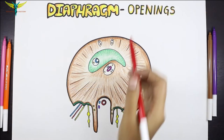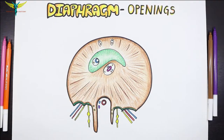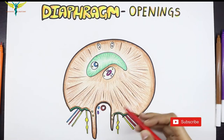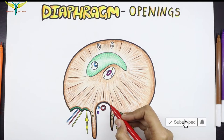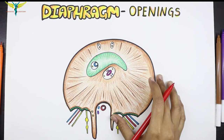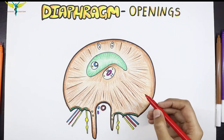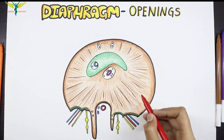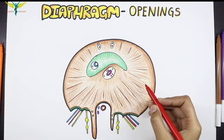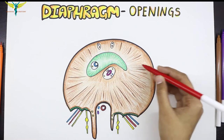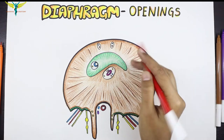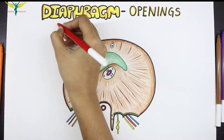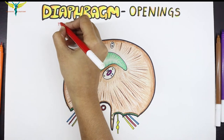In this video, let's learn about the openings of the diaphragm. The diaphragm is a thin skeletal muscle that sits at the base of the thorax and separates the abdomen from the thorax. It is present at the outlet of the thorax and is made up of muscles and tendon — the muscular part and the tendinous part — making it a large musculotendinous structure, also called the thoracoabdominal diaphragm.